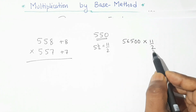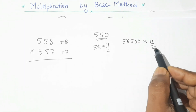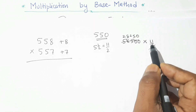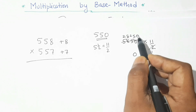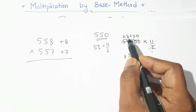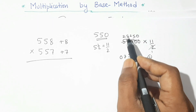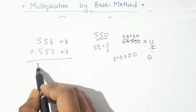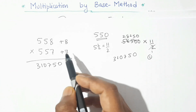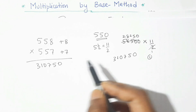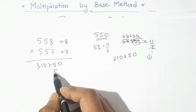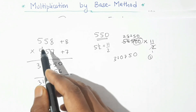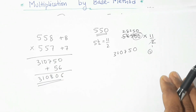With two zeros placed, 56500 divided by 2 is 28250. Then we multiply 28250 by 11: multiplying by 11 is simple — the result is 310750. No need to place additional zeros since we already placed them. The deviation product is 8 × 7 = 56. Adding 56 gives our final product: 310806.